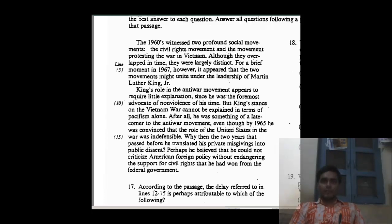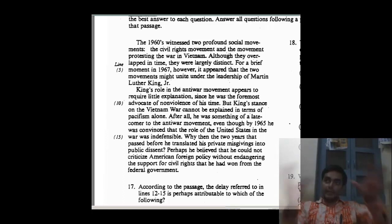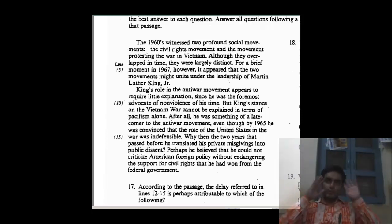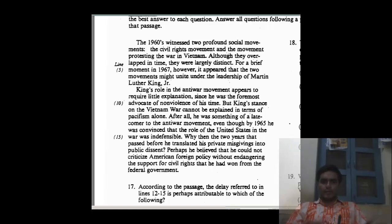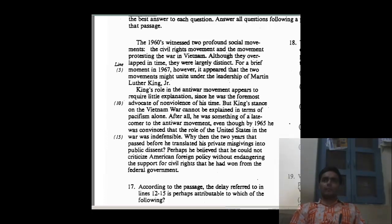After all, he was something of a latecomer to the anti-war movement, even though by 1965 he was convinced that the role of the US in the war was indefensible. Why then did two years pass before he translated his private misgivings into public dissent? When there is a question mark or trigger, you must focus on it intensely. Perhaps he believed he could not criticize American foreign policy without endangering the support for civil rights he had won from the federal government. That is the reason he came two years later.